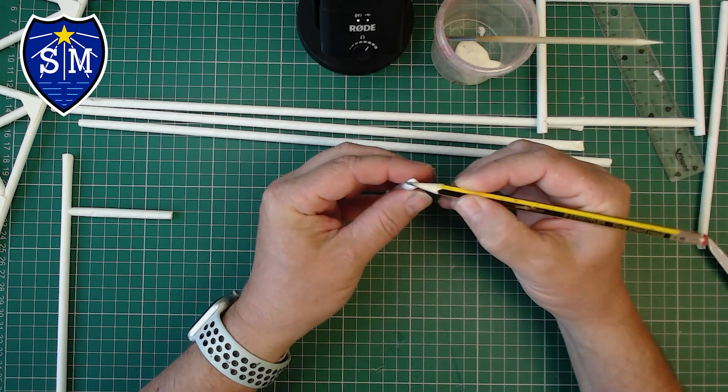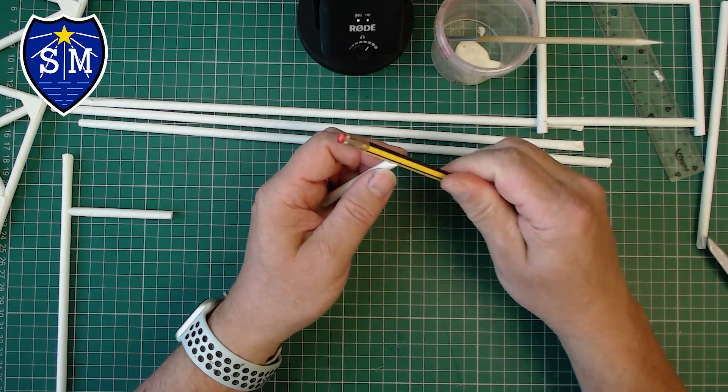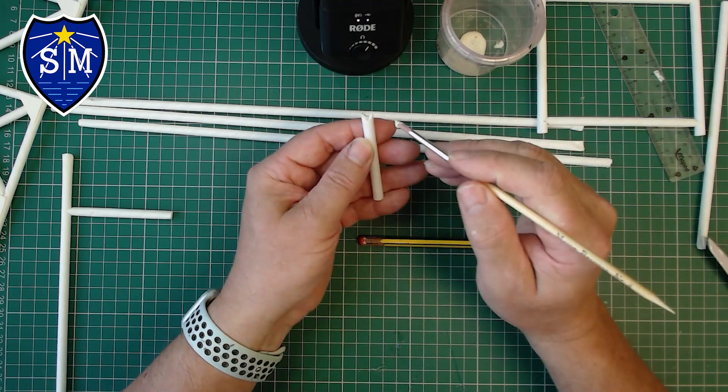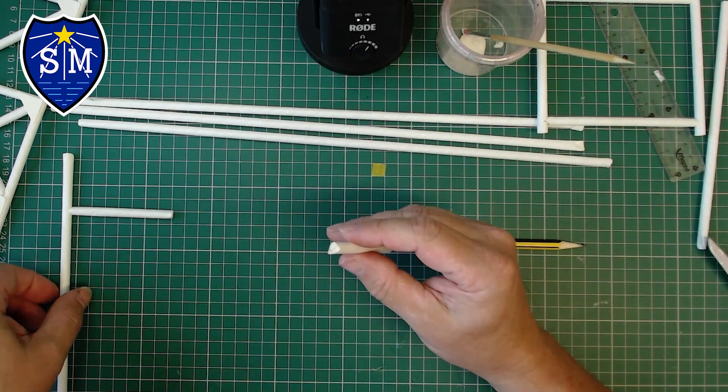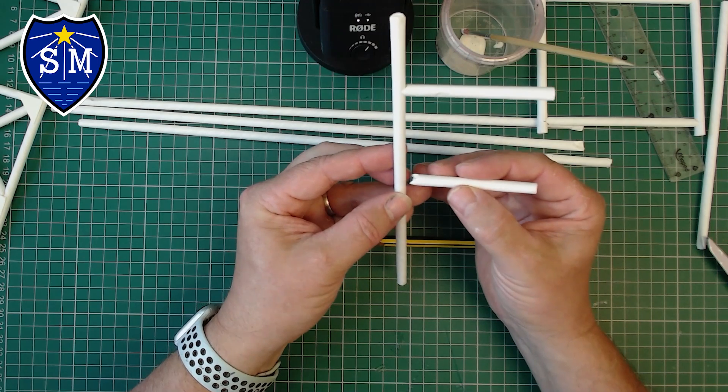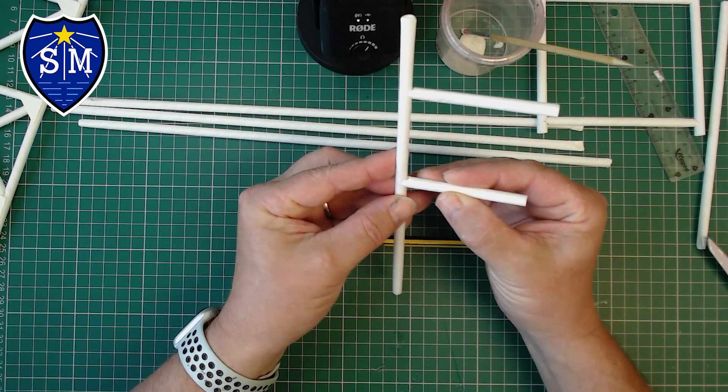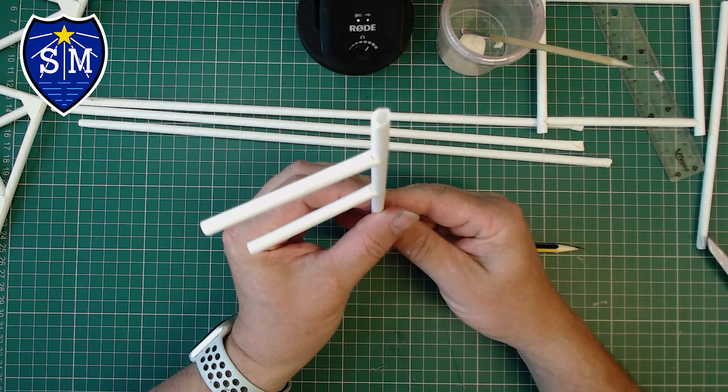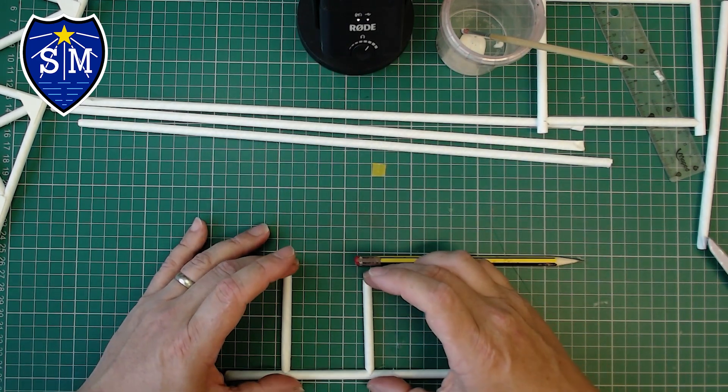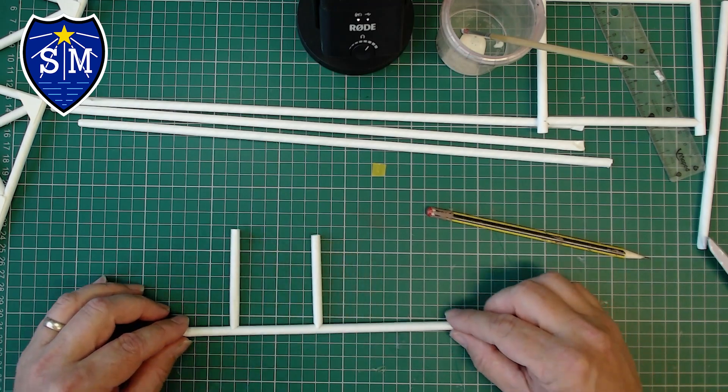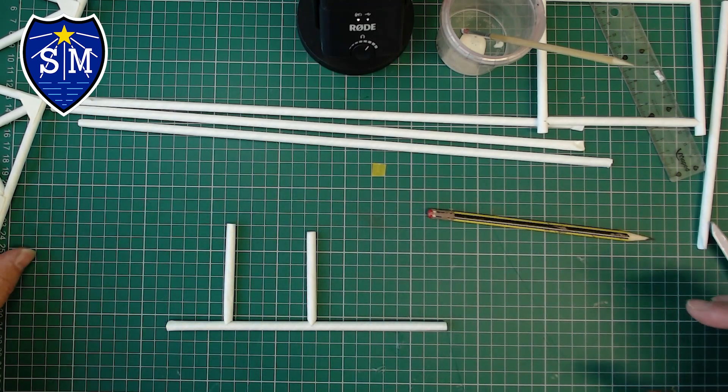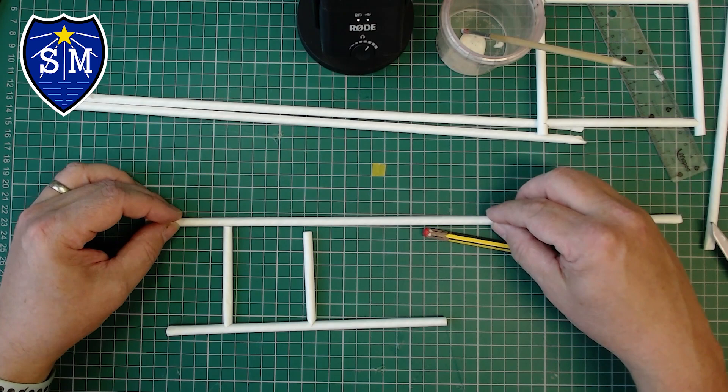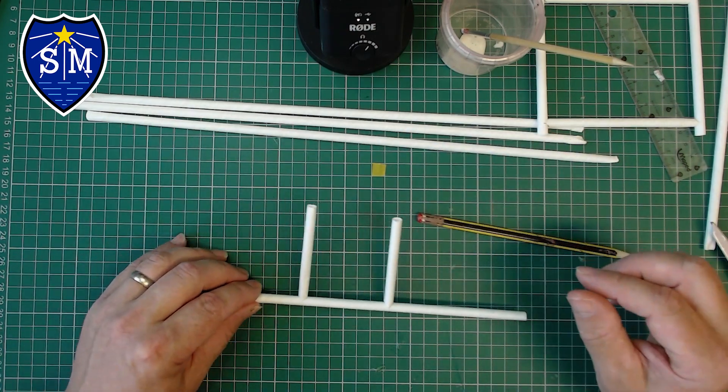I'm going to take another paper straw and do exactly the same again. Make the notch, add the glue—add quite a bit to begin with but then take most of it off—and then I'm going to add that into that section there and hold for about 10 seconds. Now I can lay that on my nice flat surface and build up slowly the sections on my bridge.